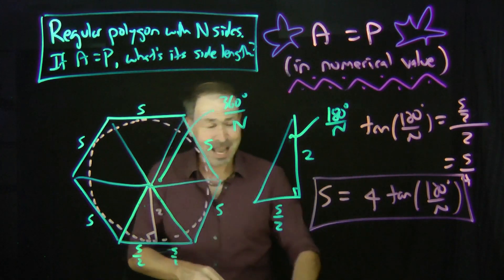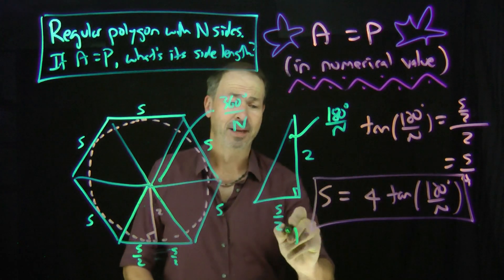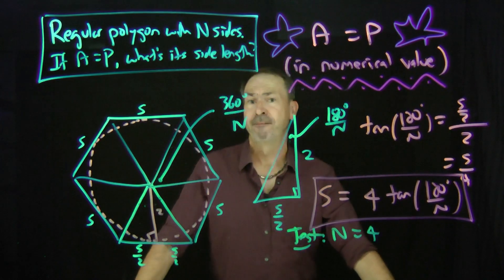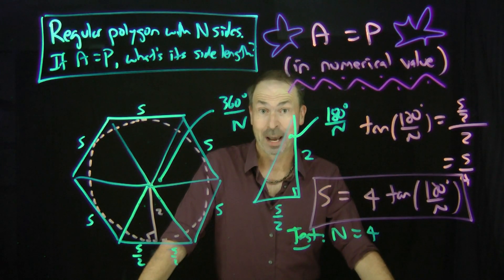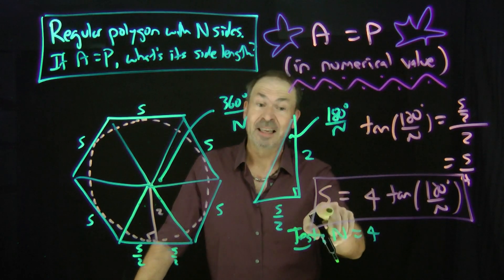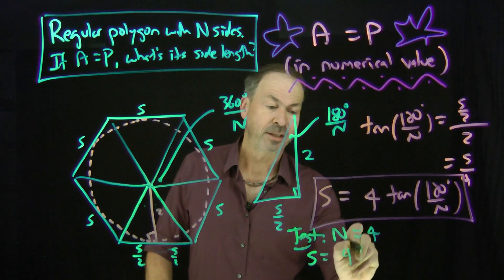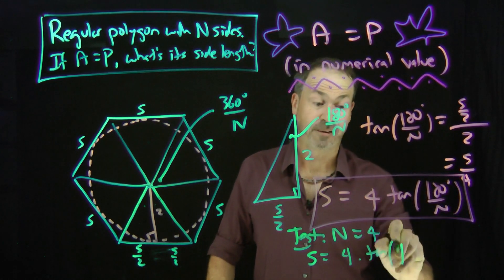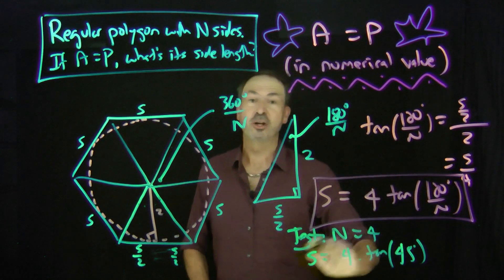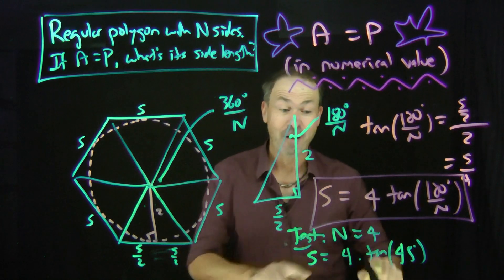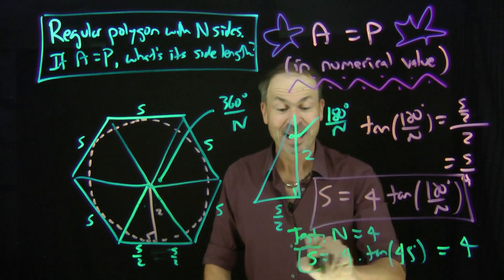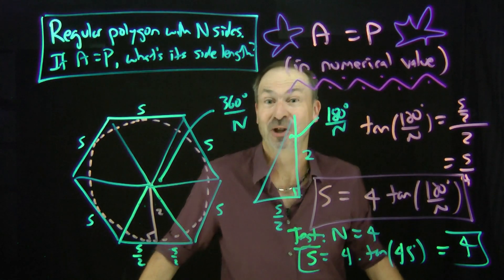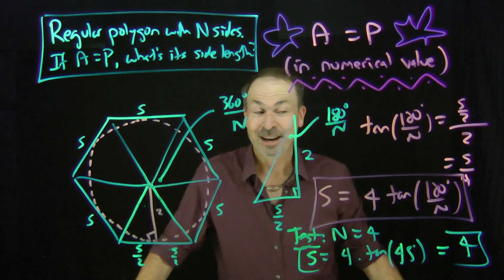Let me just test this formula. Let me actually test it for the case N equals 4, a regular four-gon. Most people call that a square. In which case what would the side length have to be? Well the side length would have to be 4 times the tangent of 180 degrees divided by 4. That's 45 degrees I believe. Tangent of 45 degrees is 1. 4 times 1 is 4. Yes. The regular four-gon, the square, would have the side length of 4, just as we saw before.